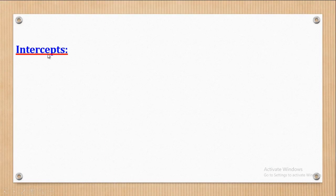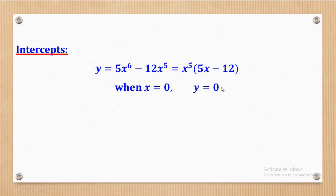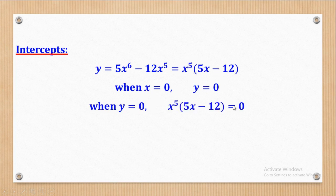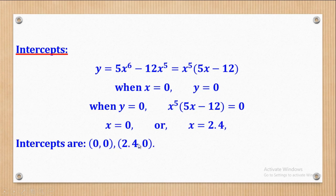Next, get the intercepts. When x = 0, y = 0. When y = 0, factorizing gives x⁵ = 0 or 5x − 12 = 0. So x = 0 or x = 2.4. Therefore the intercepts are (0, 0) and (2.4, 0).